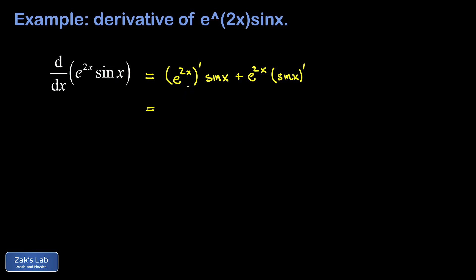So we differentiate e to the 2x with respect to 2x, and that gives us e to the 2x, just because e to the x is the function equal to its own derivative. And then we have to multiply by the derivative of 2x, which is 2. So that term is 2e to the 2x sine x.